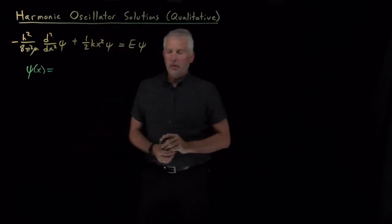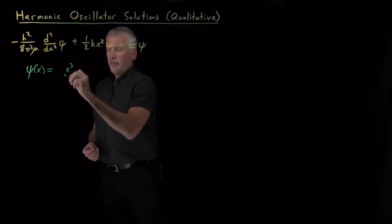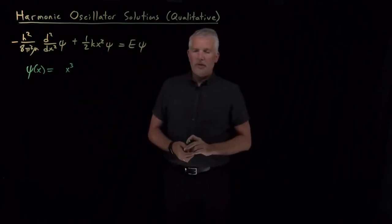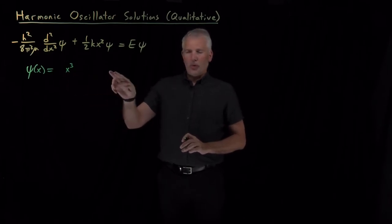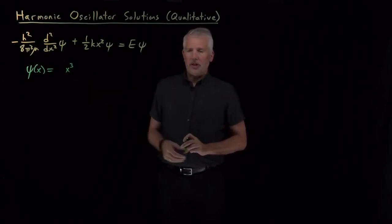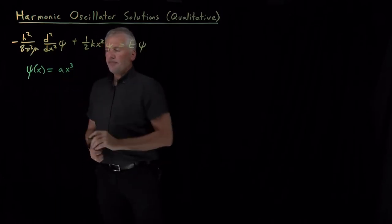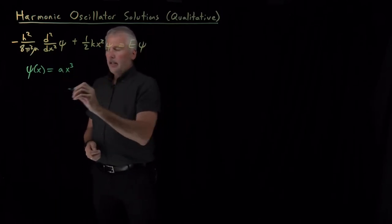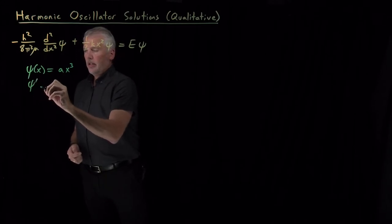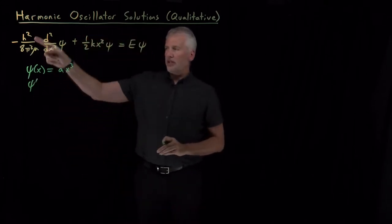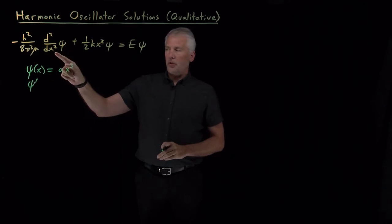We can start with a relatively simple guess — a polynomial. Let's take a function like x cubed, or x to the fifth, or x to some power. We could consider a polynomial with multiple terms, but starting simple, let's just take one term with a constant in front. We'll need the second derivative of that function to plug into Schrödinger's equation.